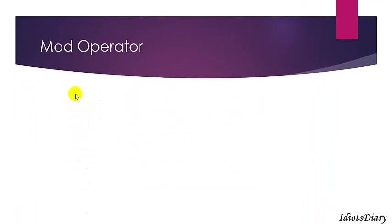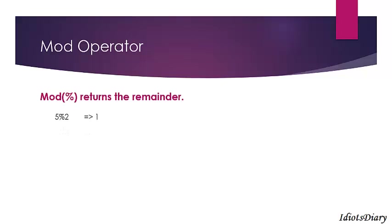The next arithmetic operator is the mod operator. The % sign represents the mod operator and it returns the remainder. For example, 5 mod 2 is 1. To understand this, suppose you have 5 rupees and want to distribute coins of 2 rupees — you can give to 2 persons and you have 1 rupee remaining, so the result is 1.